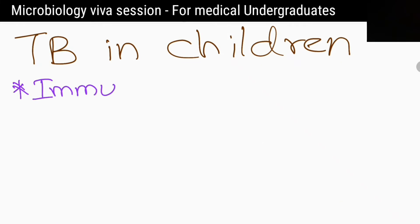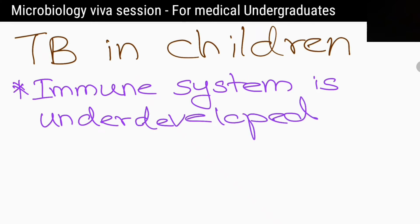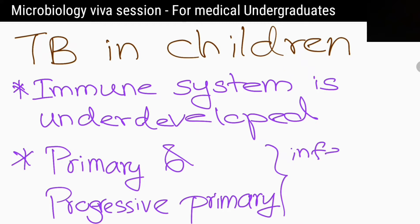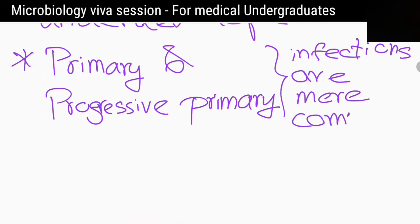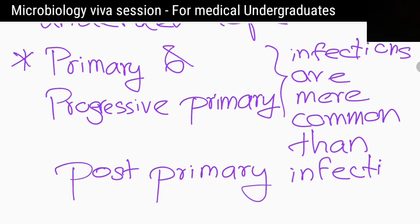Why and what are the differences in clinical manifestation of tuberculosis in children? As the immune system is underdeveloped, primary infection and progressive primary infections are more common than post-primary infections. Majority of them won't show any symptoms at any time and the disease is paucibacillary. So it is difficult to diagnose.